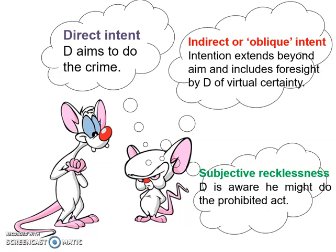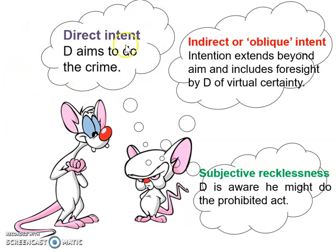From this picture you can see there are two types of intention, which might surprise you, because most people think of intention as just being direct intent — where the defendant aims to do the crime. But there is another type of intention which is slightly more complicated. Direct intent is probably the one you already understand: an example would be intending to kill someone because they're annoying, so you shoot them. There you've aimed to do the crime, intended to kill, and you have killed. That's nice and straightforward.